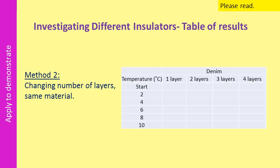The second way of investigating is to keep the material the same — for example, denim — but vary the number of layers: one layer, two layers, three layers, four layers. You wrap one layer of denim around the beaker, record the temperature from beginning to end, then repeat with a second layer, third layer, and so on.